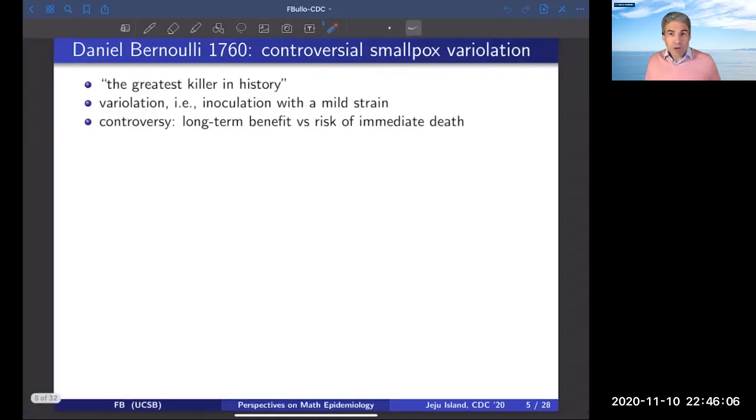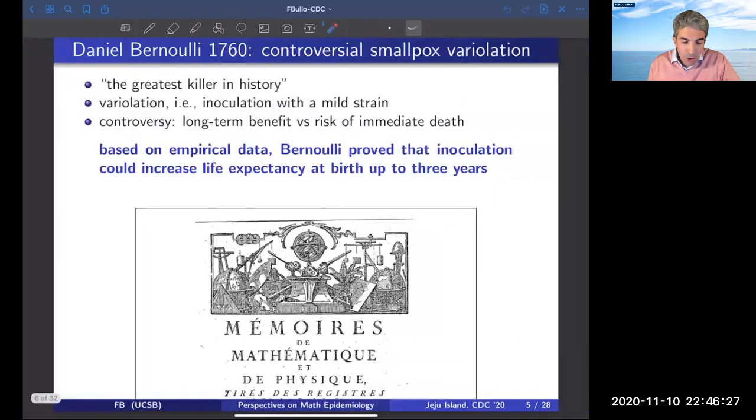The history of epidemiological models and viruses starts with early work by Daniel Bernoulli in 1760 on one of the worst viruses that ever vexed mankind, which is smallpox, and with Daniel Bernoulli's mathematical analysis of variolation, which was inoculation with mild strain of the virus. And there was an interesting mathematical analysis to evaluate the long-term benefits of variolation versus the risk of immediate death.